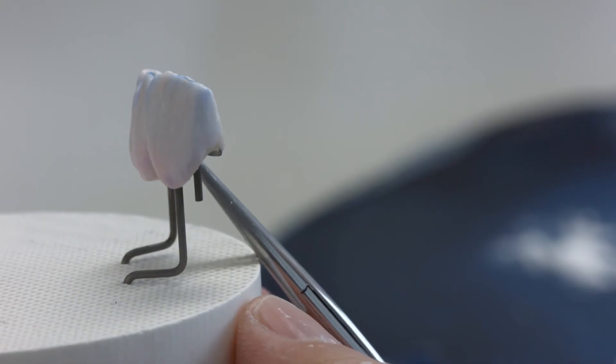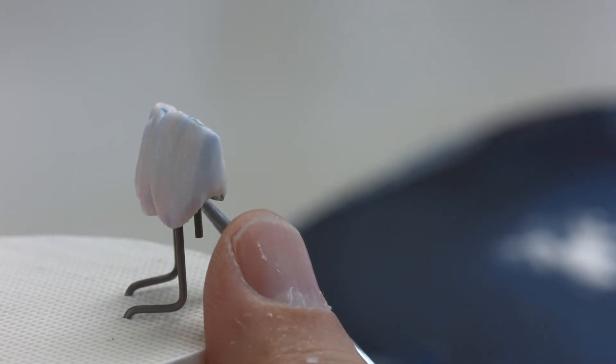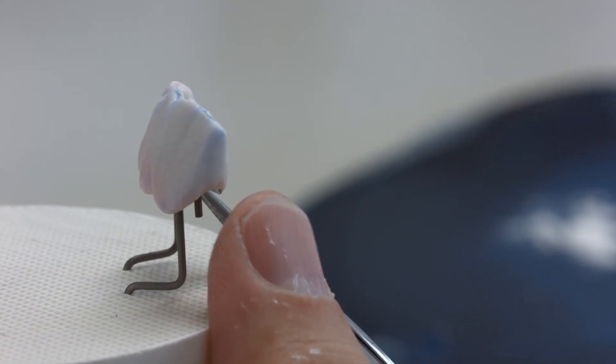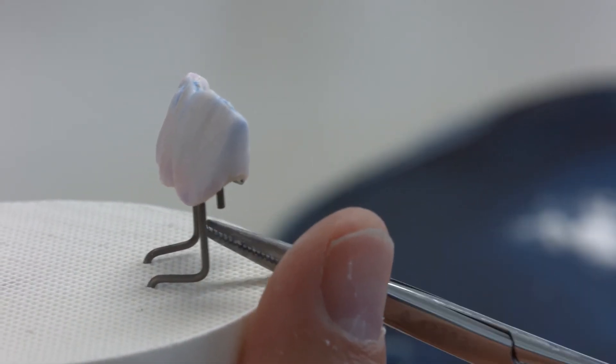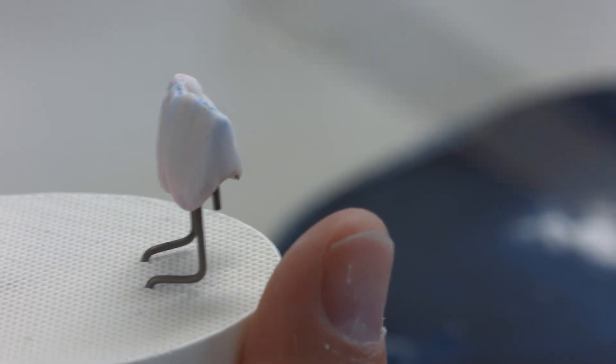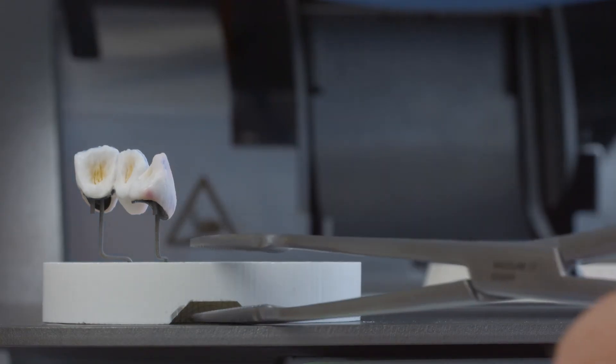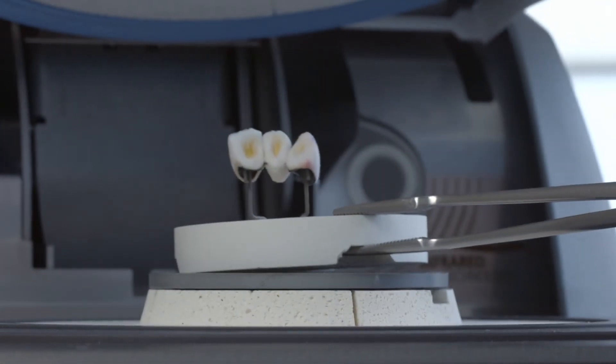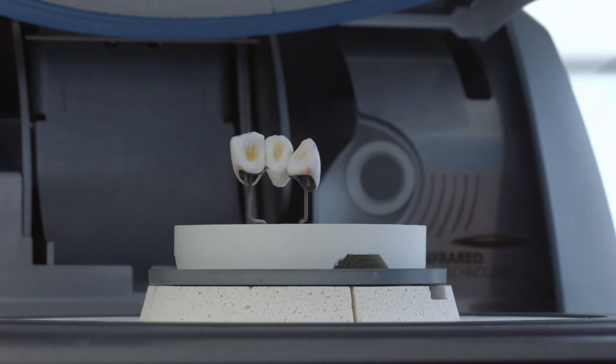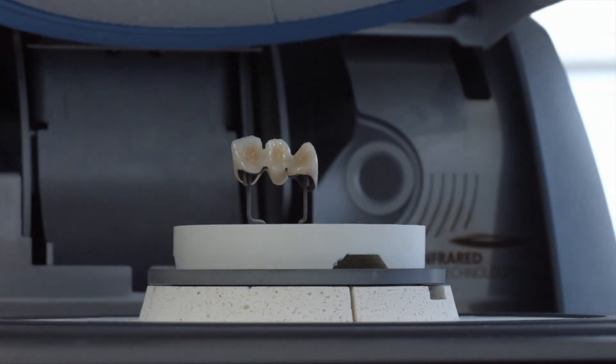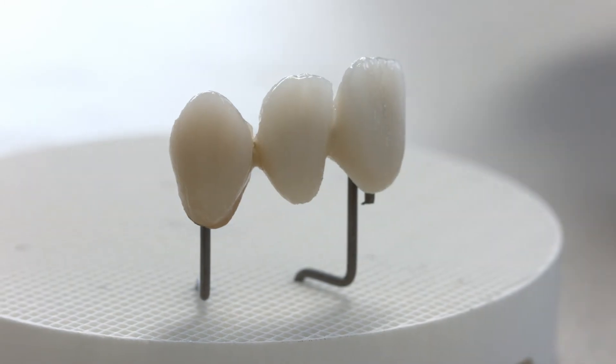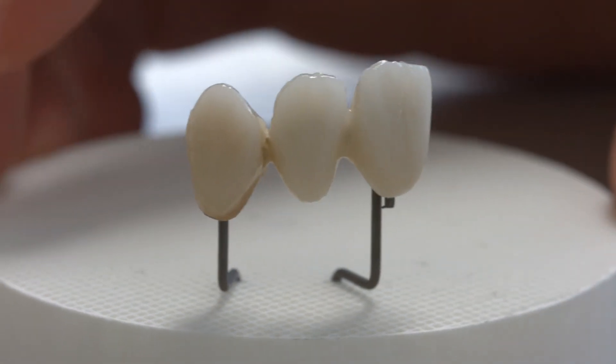Place the completely layered restoration on the firing tray and ensure that it is adequately supported. Subsequently, fire the individually layered restoration using the parameters of the first dentin and incisal firing. Remove the firing tray from the firing chamber only once the furnace head is completely open and the acoustic signal has sounded. Allow the restoration to cool down before you begin working on it.